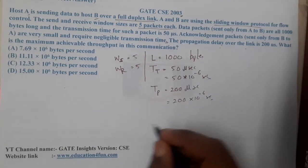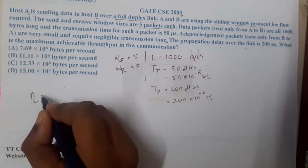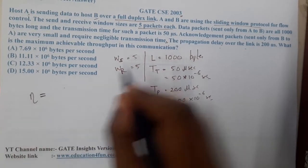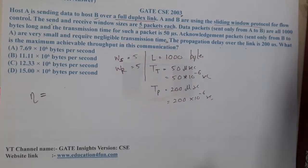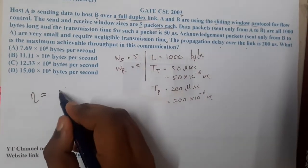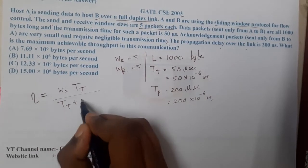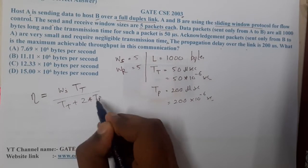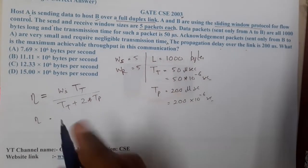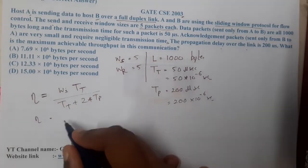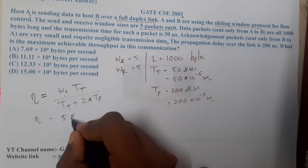First, let us find the efficiency. The formula for efficiency in sliding window protocol is: efficiency = window size of sender × TT / (TT + 2×TP). So efficiency equals WS divided by (1 + 2×TP/TT). Substituting, efficiency = 5 into TP/TT.